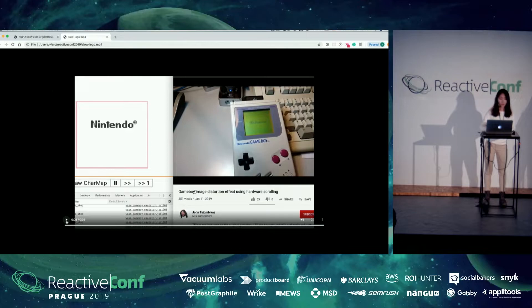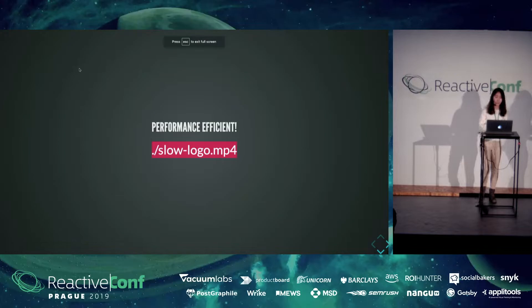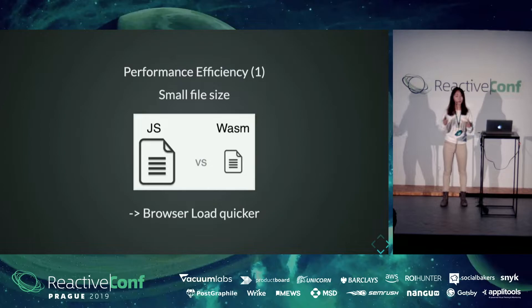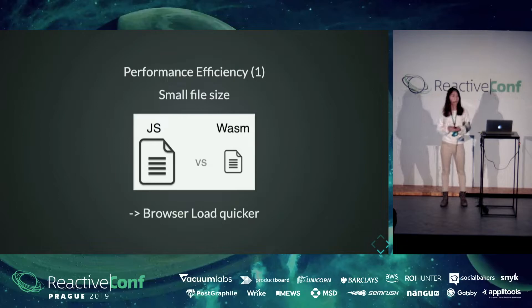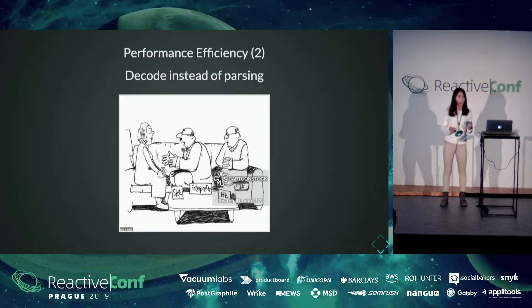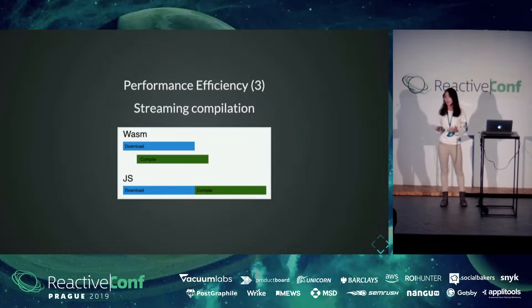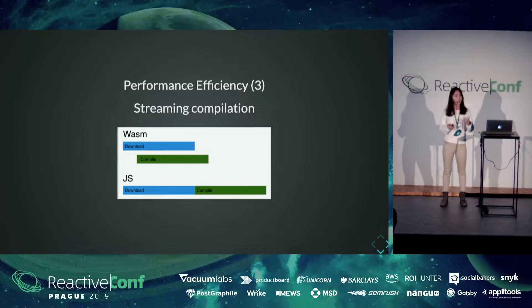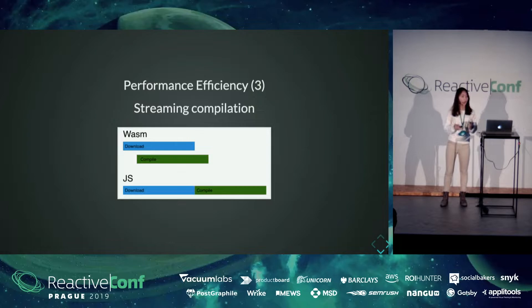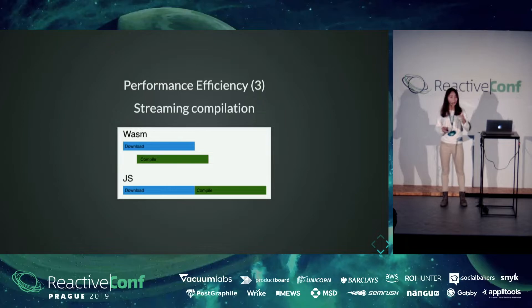So, going back to our WebAssembly - it is a performance language. Compared to JavaScript, WebAssembly is more efficient mainly for three reasons. First, the file size is small, so the browser can load it quicker. Second, the WebAssembly code is relatively close to the machine code, so the browser only needs to decode it instead of parsing it. You can think of it as you finally don't need an interpreter between your code and the computer, so the communication speed is much faster. Finally, streaming compilation. Usually in JavaScript, the browser can only compile the file after it finishes downloading. But with WebAssembly, the browser can compile while downloading the file, so there is also some time saved here.